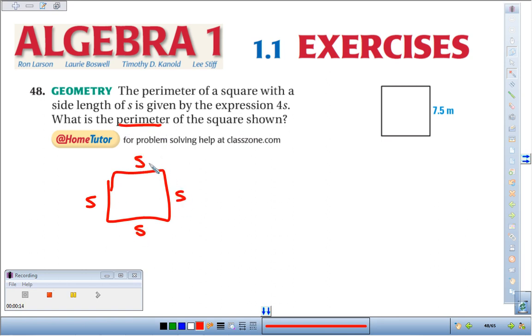Perimeter is just the walk around distance. You add them all up. If you've got an s plus an s plus another s plus another s, well, you've got four s's, and that's where they got this expression.